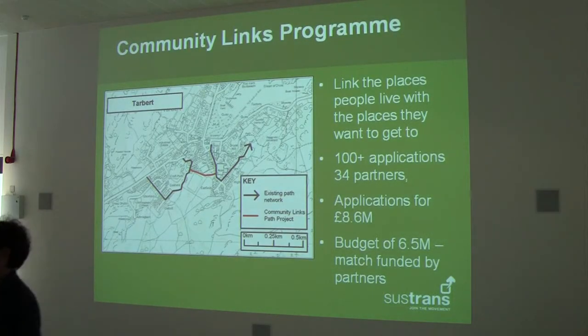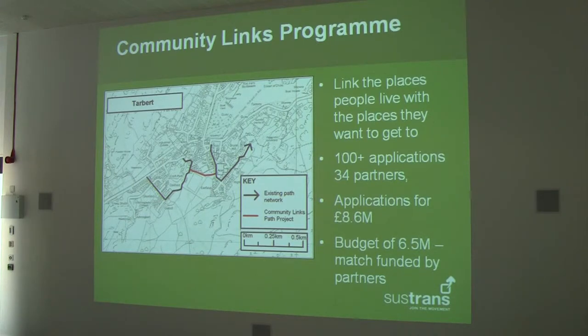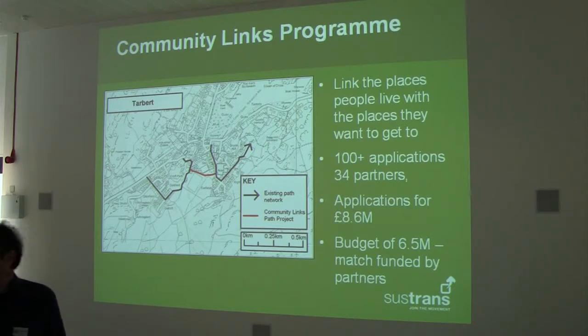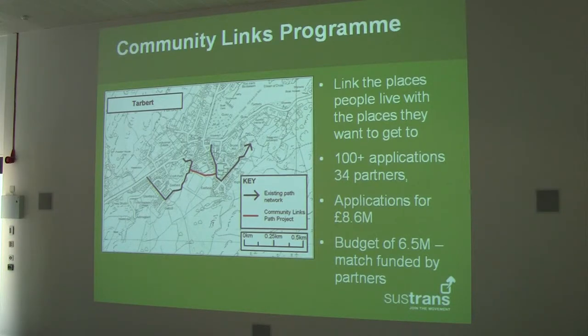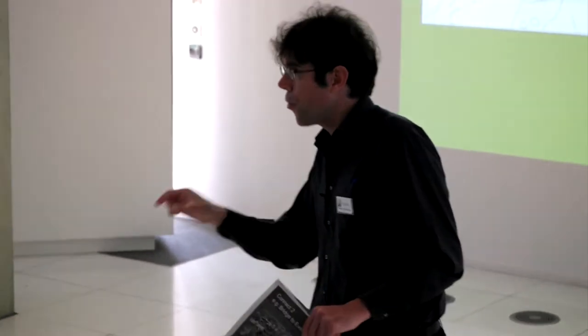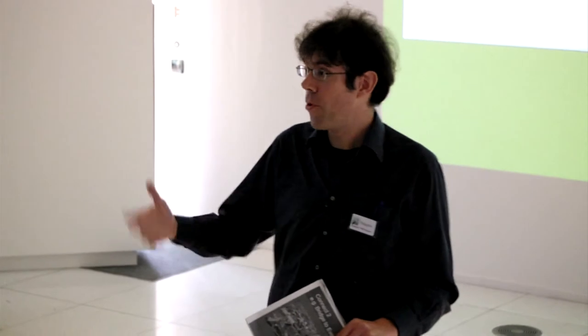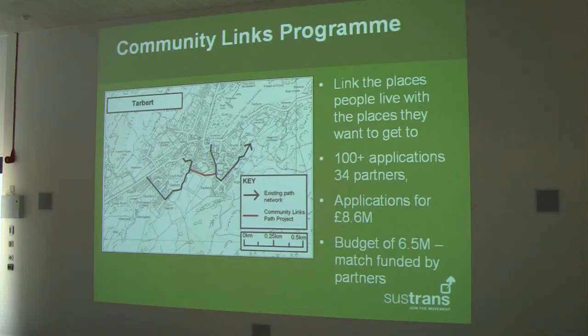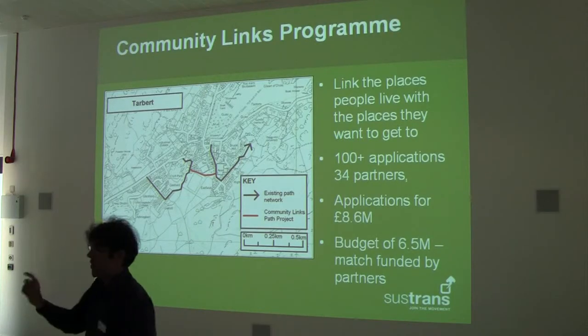I'm going to briefly outline four themes of work within the organisation. We have the Community Links Programme. The way I picture it is that it's money which enables councils and other organisations to build small key links which make a very good difference to cycling, walking and other modes of transport rather than private cars. That's what the map shows here — a small key link which makes a very big difference.